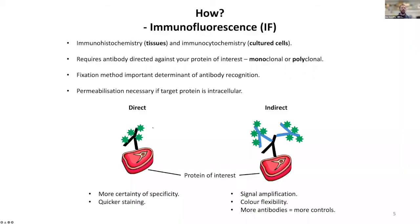The most important readily accessible technique is immunolabeling, called immunohistochemistry in tissues and immunocytochemistry in cultured cells. It requires antibodies directed against your protein of interest. These can be monoclonal, directed against a single epitope within the protein and very specific, or polyclonal, where they recognize multiple different epitopes. Polyclonal antibodies can sometimes bind monospecific targets as well.